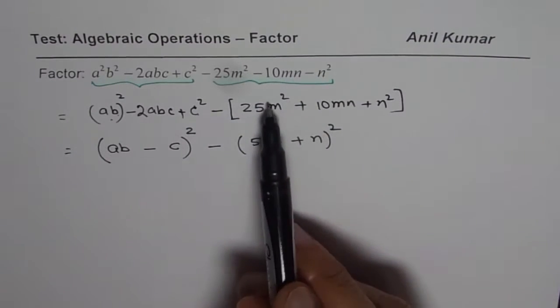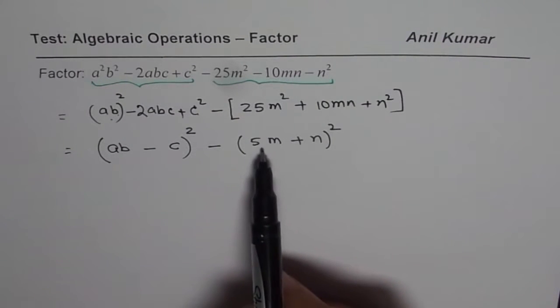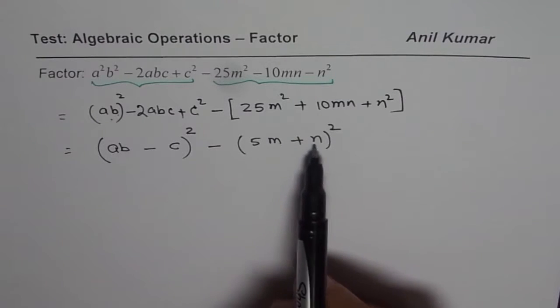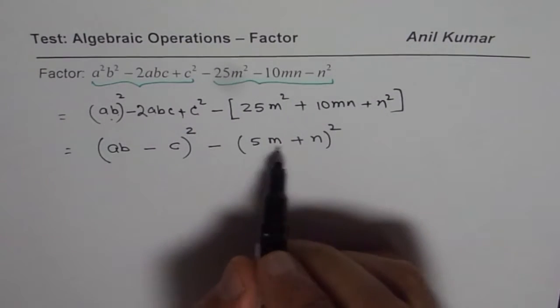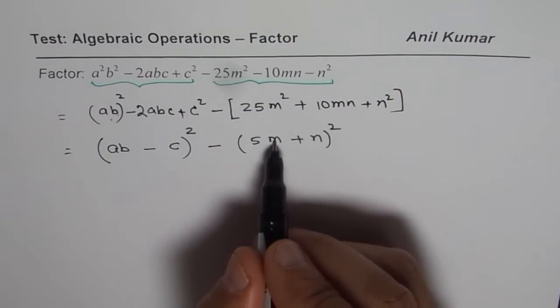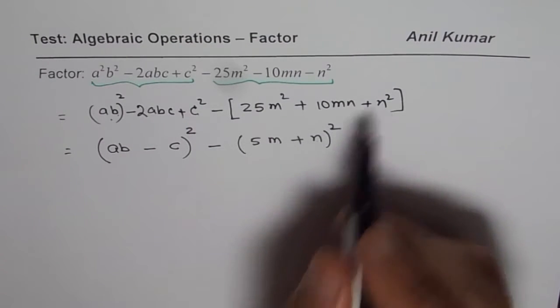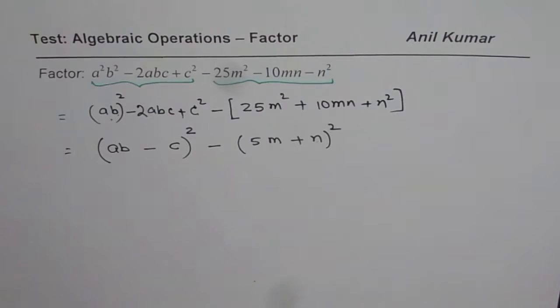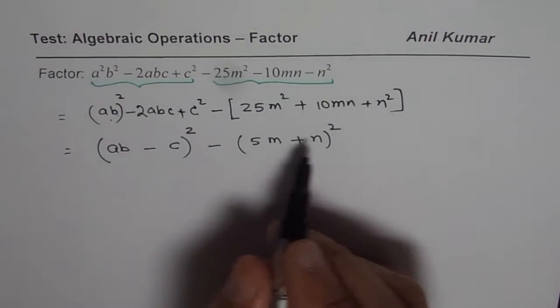Now if you expand this, you will get 25m² plus 2 times these terms. So 2 times 5 is 10, mn plus n². You get the idea. So that is how we could actually factor it. Now we can apply difference of squares.